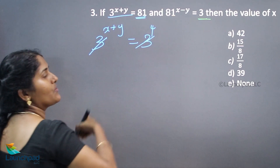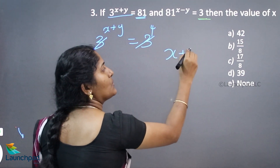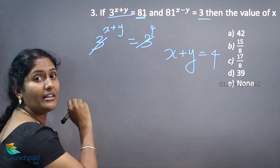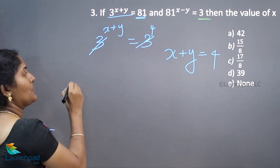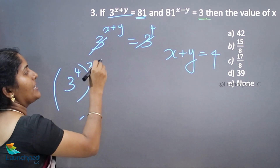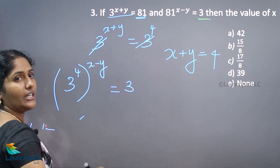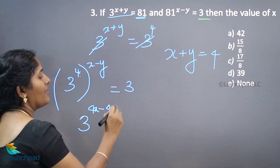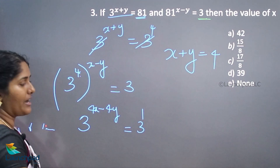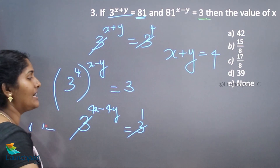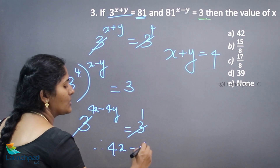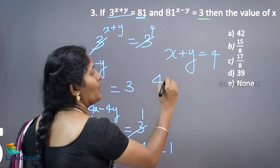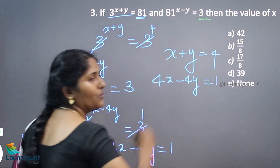The base value is 3. 3 to the power of x plus y equals 81, which can be written as 3 to the power of 4. Base values are same, therefore x plus y equals 4. This is the first equation. For 81 to the power of x minus y equals 3, we write 81 as 3 to the power of 4, so 3 to the power of 4x minus 4y equals 3 to the power of 1. Hence the second equation is 4x minus 4y equals 1.